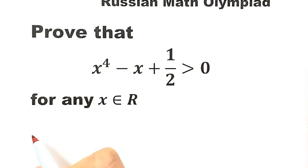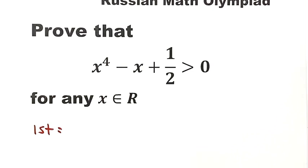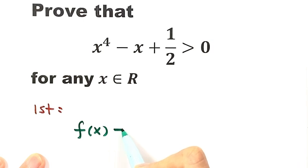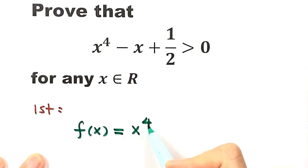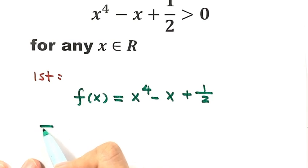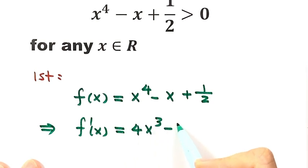We're going to use two methods to prove this. The first method is a general calculus method that works for many optimization problems. First, let's define a function f of x, which equals the left-hand side of the inequality: x to the fourth minus x plus one half. Let's take a look at the first order derivative, which is 4x cubed minus 1.